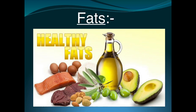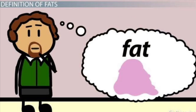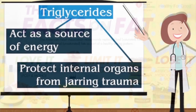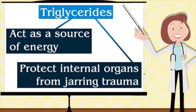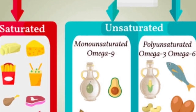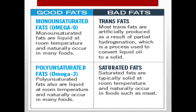Fats are compounds of glycerol and fatty acids. The latter are made up of carbon, hydrogen, and oxygen. Fats are solid forms and oils are liquid forms. Fats are divided into two parts: good fats and bad fats. Good fats — monounsaturated or polyunsaturated fats — are liquid at room temperature. Bad fats — trans fats or saturated fats — are artificially produced through partial hydrogenation, converting liquid oil to a solid.